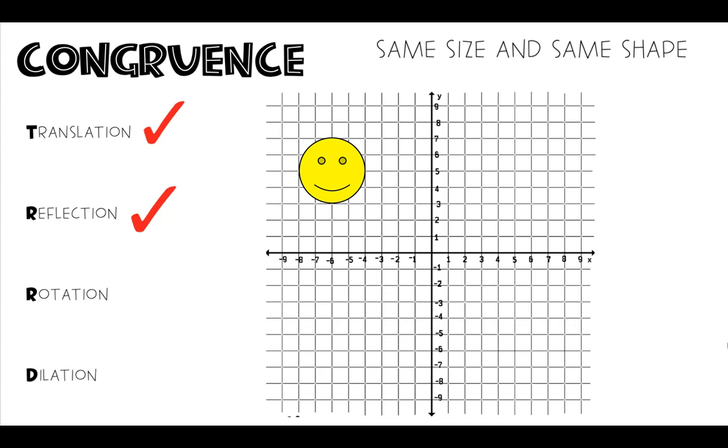Let's look at a rotation. If we rotate our smiley face 180 degrees, did the size or the shape change? No, it's still the same size, still the same shape, just in a new location. So that one still keeps congruence.